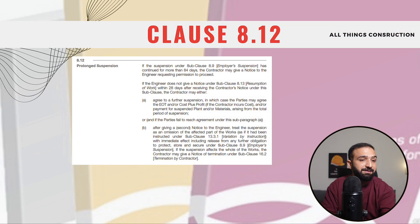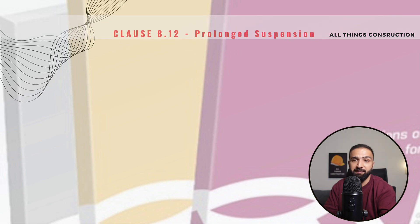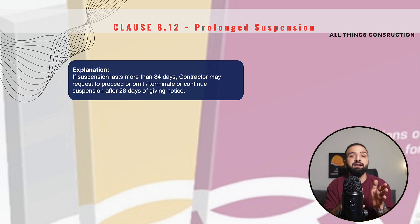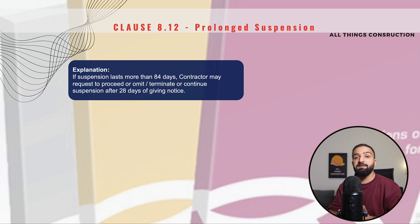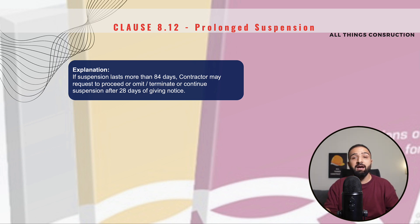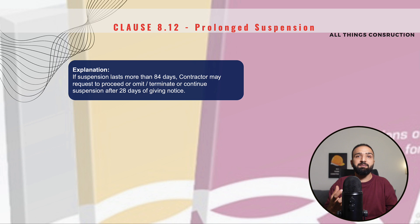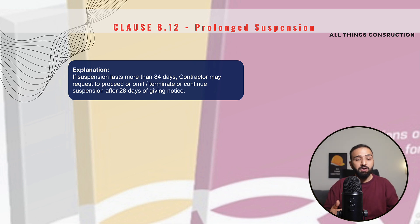Clause 8.12 is Prolonged Suspension. This sets a timeline on suspension. If the suspension continues for more than 84 days, we contractors should write officially to the engineer and ask whether we are okay to resume the works. If the engineer asks us to proceed, we will proceed. However, if the engineer does not respond to our notice within 28 days, we can write to the engineer that we don't want to do these works anymore — we can terminate a part of the works, or if the suspension governs the entire project, we can also terminate the whole project. This protects us from being suspended indefinitely and having our resources and money tied up in the project for a long period of time.